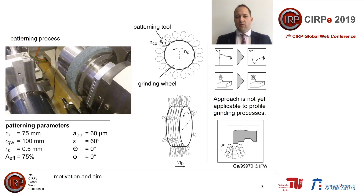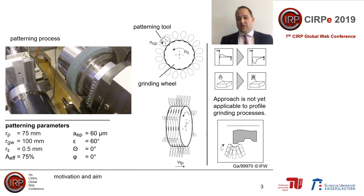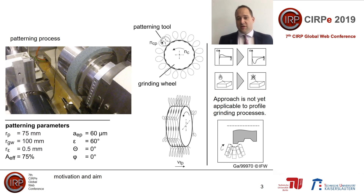One approach to reduce the thermal load on the workpiece is the patterning of the grinding wheel topography. This process is shown as an example on the left. It uses a patterning tool rotating at a higher rotational speed than the grinding wheel. In this example, the tool features only one cutting edge, but a higher number of cutting edges is possible. This approach was investigated for conventional grinding tools in the past; however, it is not yet applicable to profile grinding processes.